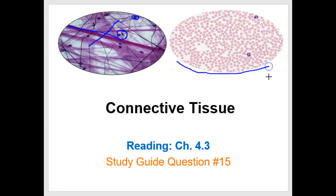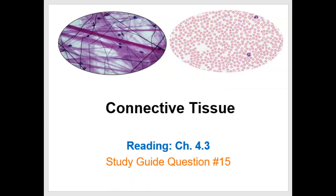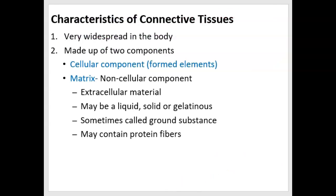They're existing in a somewhat gelatinous matrix with protein fibers running through the matrix. Now the blood also has cells living in a matrix. The light pink ones are red blood cells, and the bigger purple ones are white blood cells or leukocytes. And they live in plasma, which of course is a liquid matrix. So the characteristics of connective tissue include that they're very widespread throughout the body in axial structures as well as appendicular structures. And they're all made up of two components: a cellular component, meaning a cell type of some sort, and a matrix that the cell lives in.